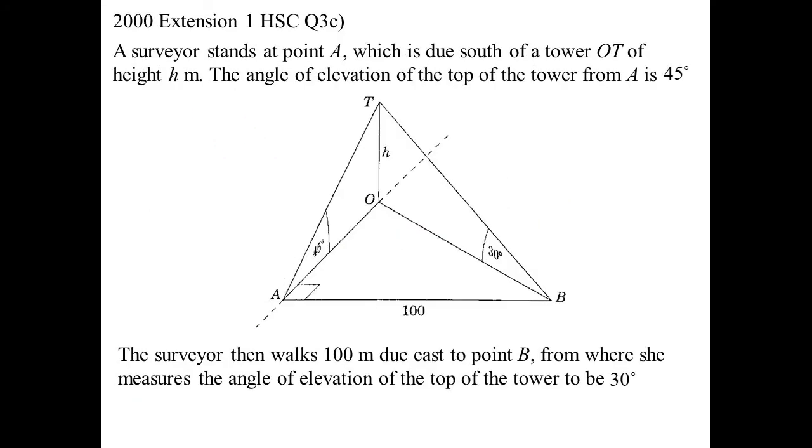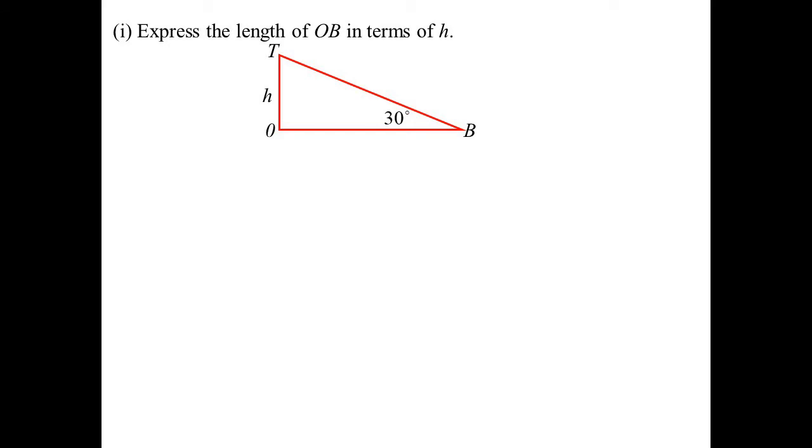Here's an HSC one. So a surveyor stands at the point A, that's due south of OT. The angle of elevation, 45 degrees. Then they go and walk 100 meters to point B, which is due east, which tells me that that's a right angle down there at the base, where she measures the angle of elevation to be 30 degrees. Express the length of OB.